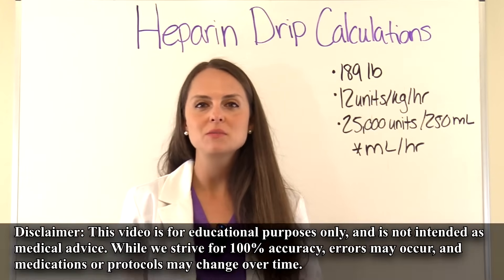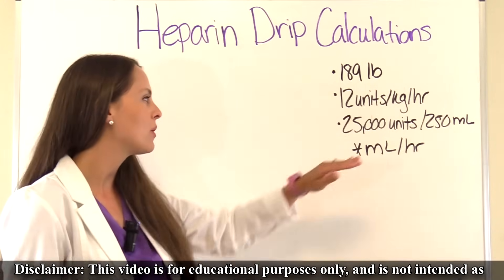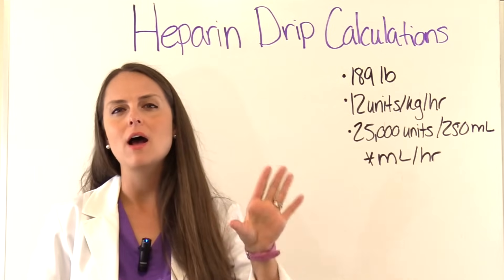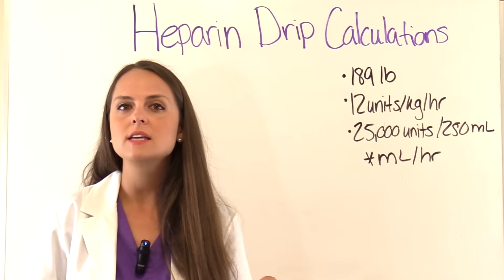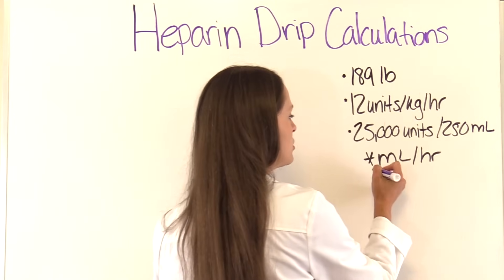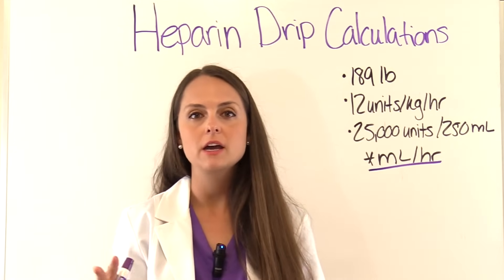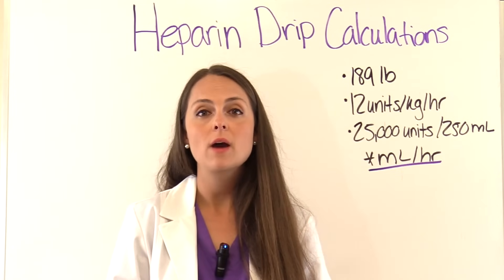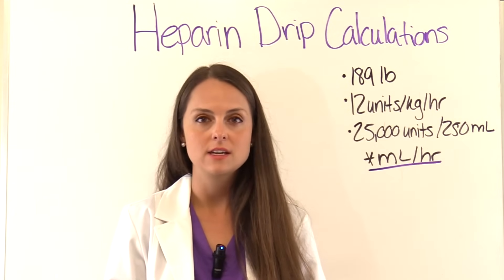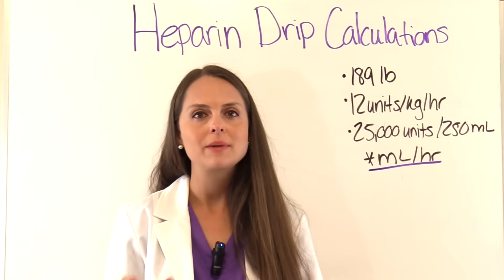The first thing we want to do is take out the most important information to help us solve the problem. We need to know what the problem wants us to solve for, because heparin drip calculations will ask you to solve for a wide variety of things. This specific problem wants us to figure out the flow rate — so we're trying to get to milliliters per hour. I use dimensional analysis, and we'll be rounding our answers to the nearest tenth. Always follow what your nursing program or facility requires.